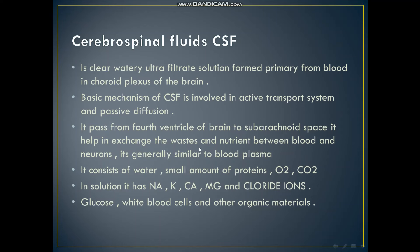It helps in exchanging waste and nutrients between blood and neurons. It is generally similar to blood plasma. It consists of water, small amounts of protein, oxygen, carbon dioxide, and in solution it has sodium, potassium, calcium, magnesium, and chloride ions. It also has glucose, white blood cells, and other organic materials — all of which are found in the cerebrospinal fluid.